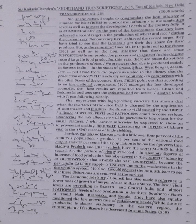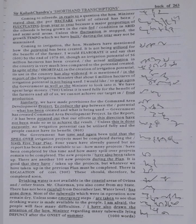The Economic Advisory Council has also made a reference to lower rates of growth of output of rice in these states. The low yield levels are prevailing in eastern and central India and almost stationary levels of rice production in the three southern states of Tamil Nadu, Karnataka, and Kerala. They have also equally mentioned the low growth rate of pulses and oil seeds. While the rice production is almost stationary in the eastern region, the consumption of fertilizers has decreased in some states.